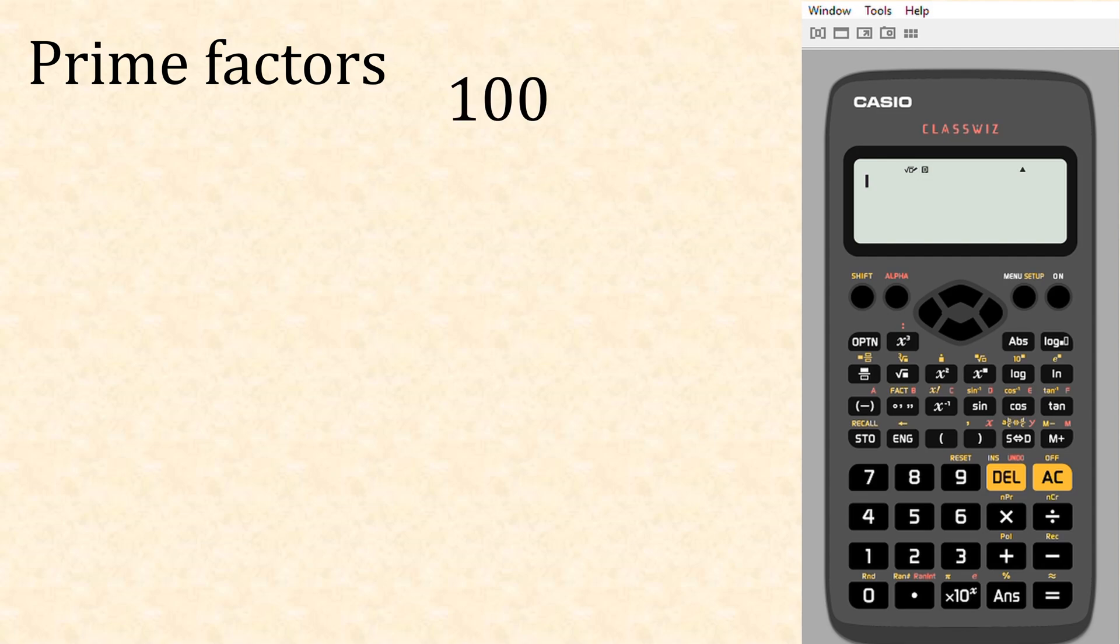If we had the number 100, this is the way we do it in a factor tree. It's divided by 25 four times, and then what goes into 25? That's five times five. And what goes into four? That's two times two.